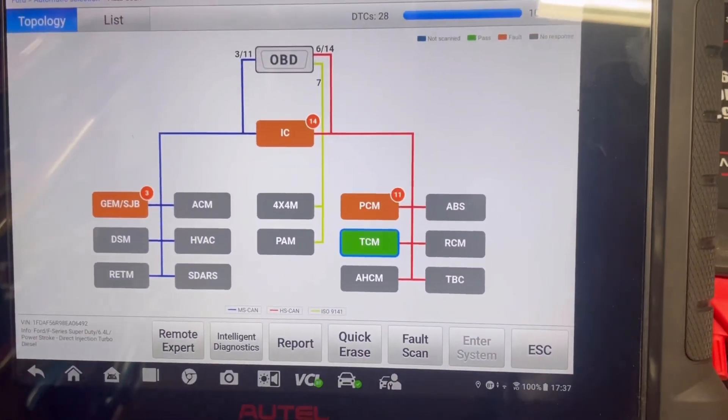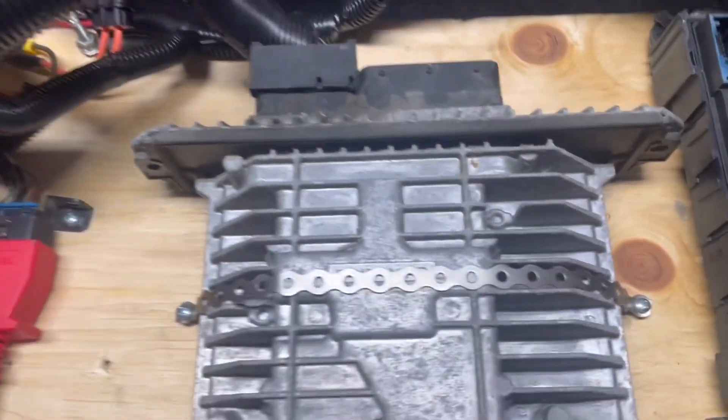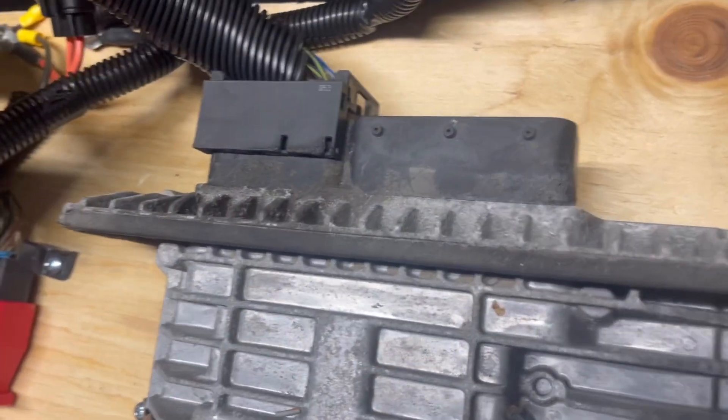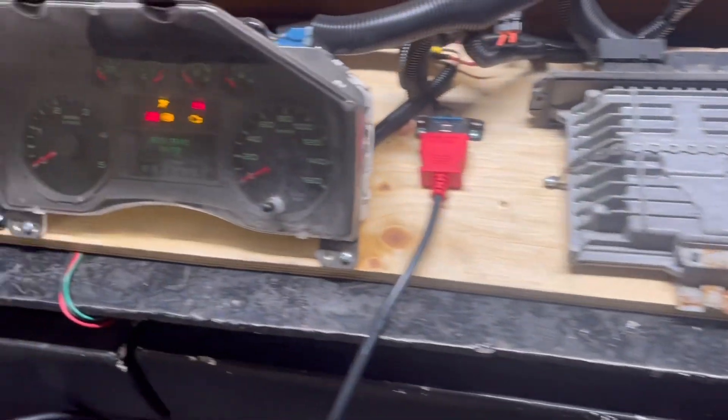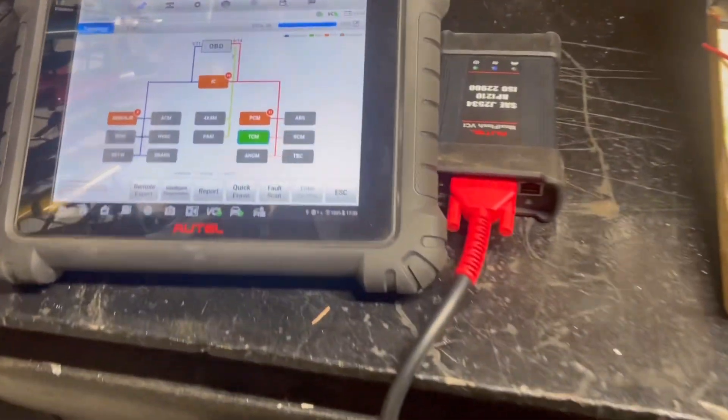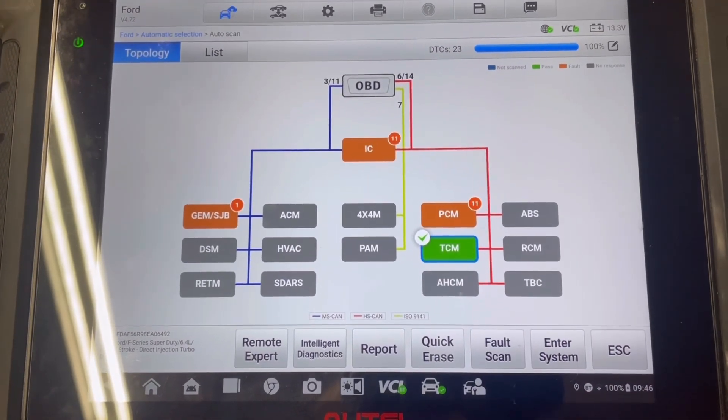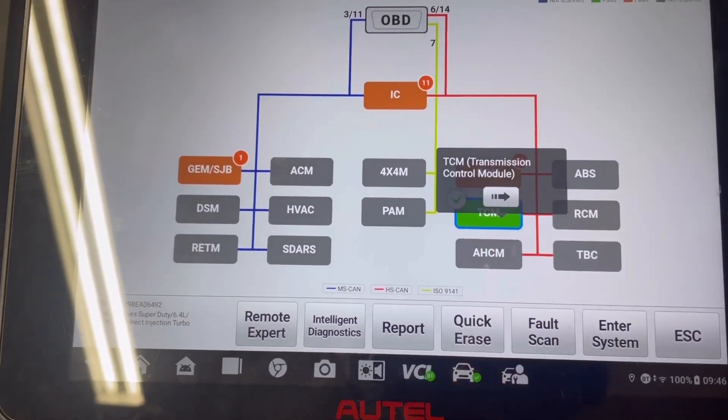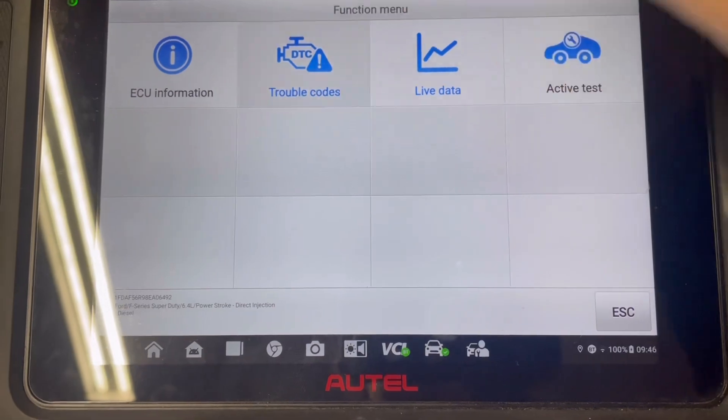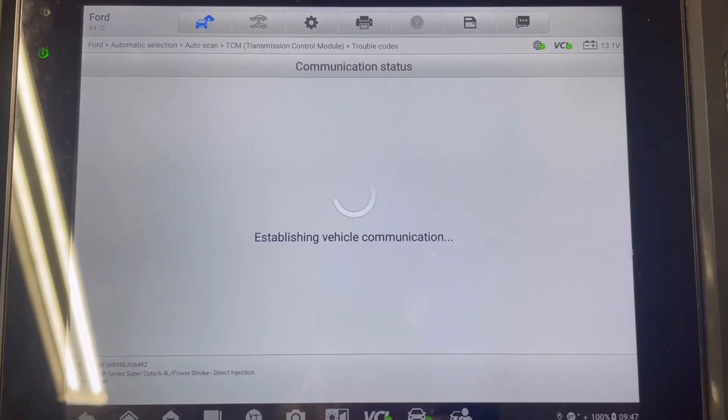We're not going to get into detail on the instrument cluster, as long as it's communicating I'm happy with that. Next is the PCM with 11 active faults. Well as you might have noticed, the engine side connector is completely disconnected, so having 11 faults I'm actually surprised that it's not a lot more. So next on our list is the transmission control module reading zero faults in green. Let's go investigate that and see if it's consistent, which I doubt because there's nothing plugged in, so let's see what it's got to say.